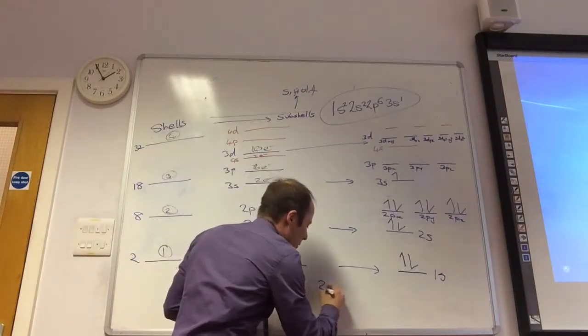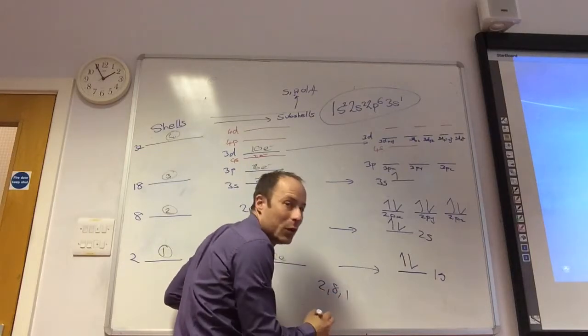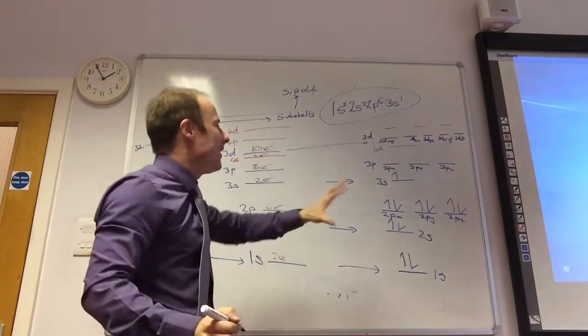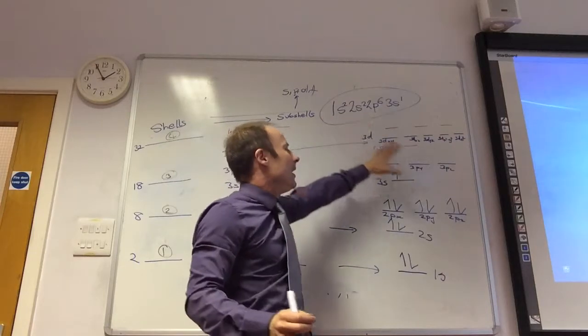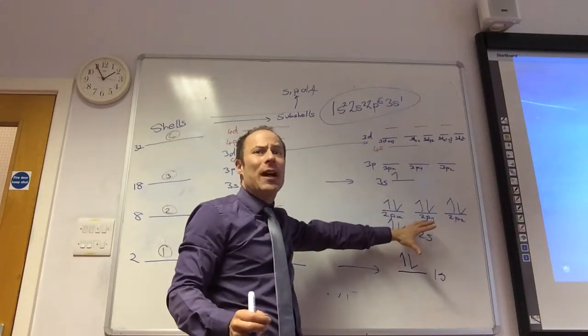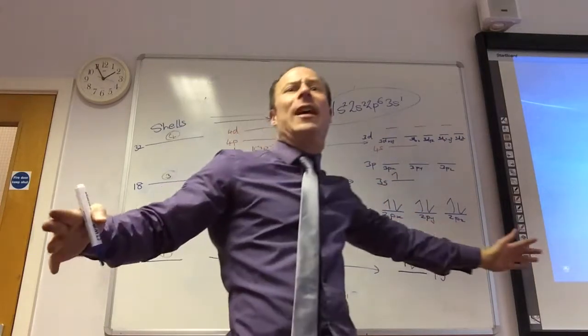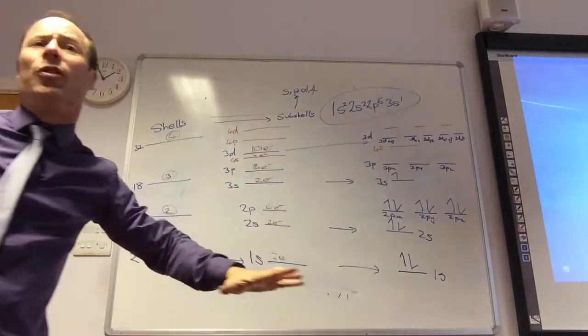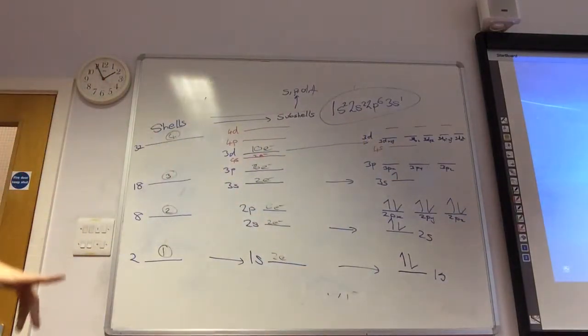The electronic configuration of sodium is 1S2, 2S2, 2P6, 3S1. That is how we now represent the electrons for sodium at A level, rather than GCSE. We would have said it's 2, 8, 1. If they want the electronic configuration in boxes, you have to show them spread out. And you spread them out across the orbitals before you start pairing up.